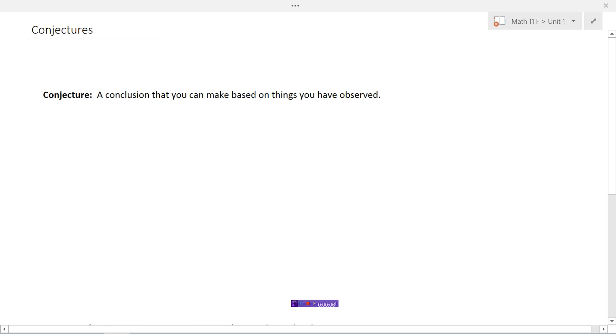Conjectures. So a conjecture is a conclusion that you can make based on things that you have observed.